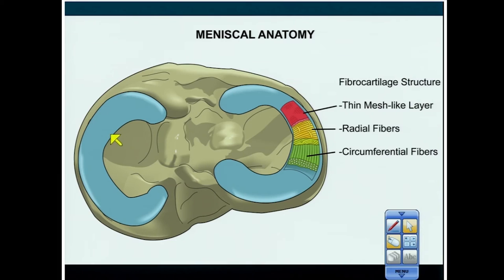On the inside, the free edge of the meniscus is not attached — it's like the wingtips of a manta ray, just floating in synovial fluid. Sometimes it will get a little bunched up or squished, and when it does it looks a little funny, especially when there's synovium. That is the normal phenomenon and pitfall known as meniscal flounce.